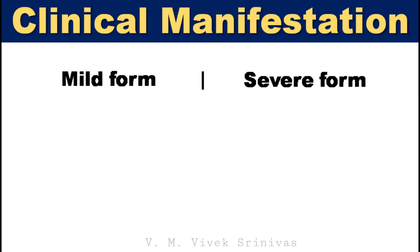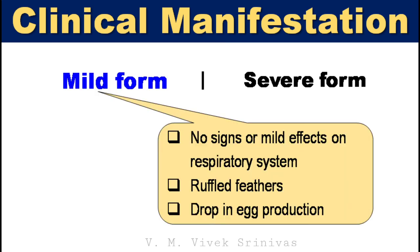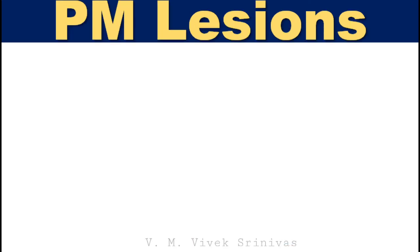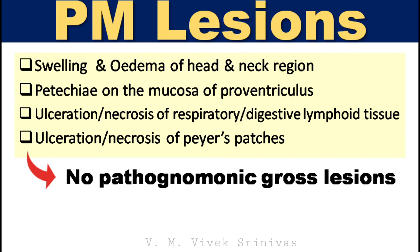Clinical manifestations. Based on the severity of infection, a bird may present with a mild form — such as no clinical signs or mild effects on the respiratory system, ruffled feathers, and drop in egg production — or a severe form with severe depression, inappetence, drastic decline in egg production, facial edema, swollen and cyanotic combs and wattles, hemorrhages on internal membranes, and sudden death in flocks. Postmortem findings and gross lesions: the lesions are not pathognomonic and are often misdiagnosed. Findings include swelling and edema of the head and neck region, petechial hemorrhage on the mucosa of the proventriculus, ulceration or necrosis of respiratory or digestive lymphoid tissue, and ulceration or necrosis of Peyer's patches.